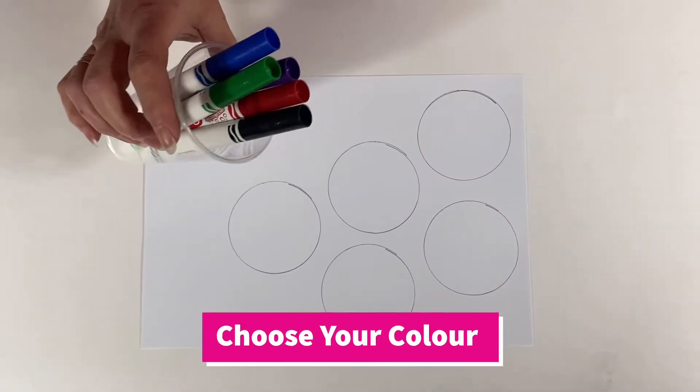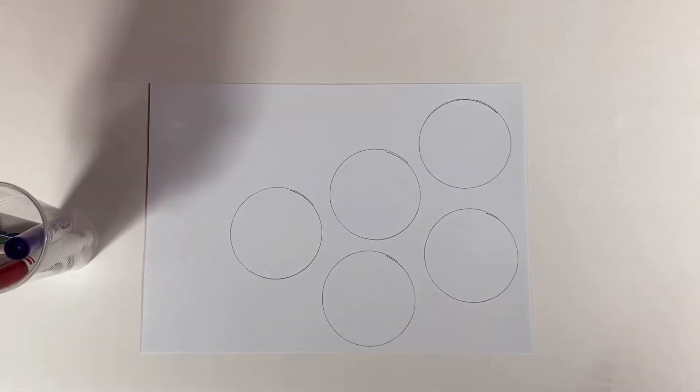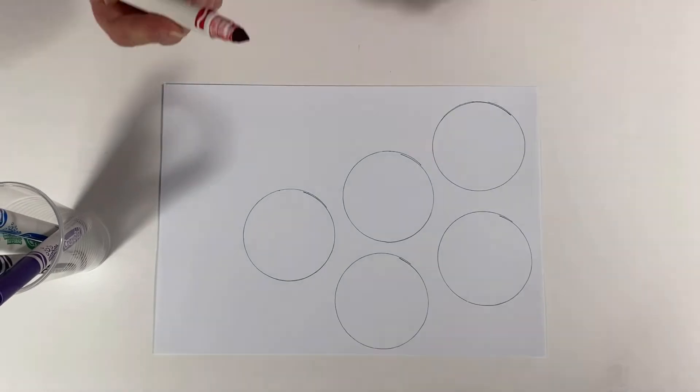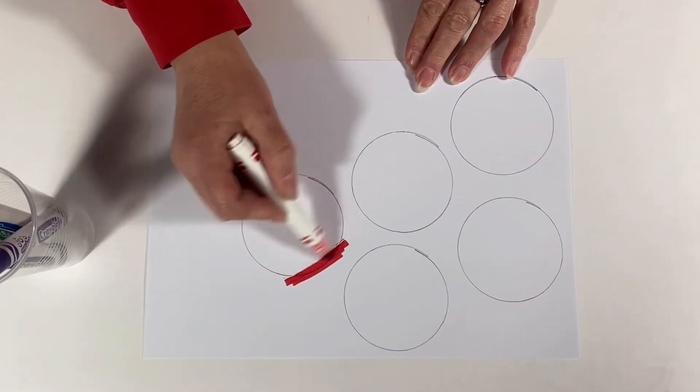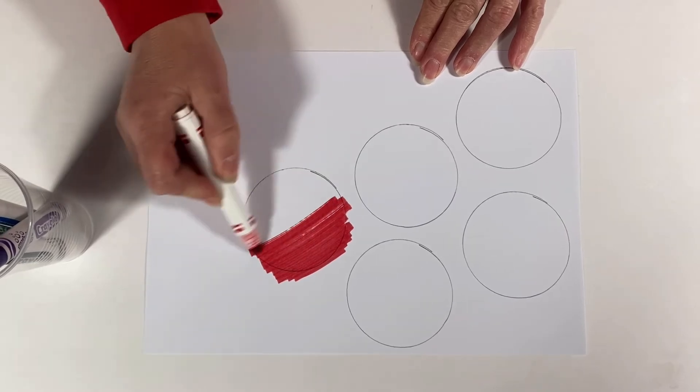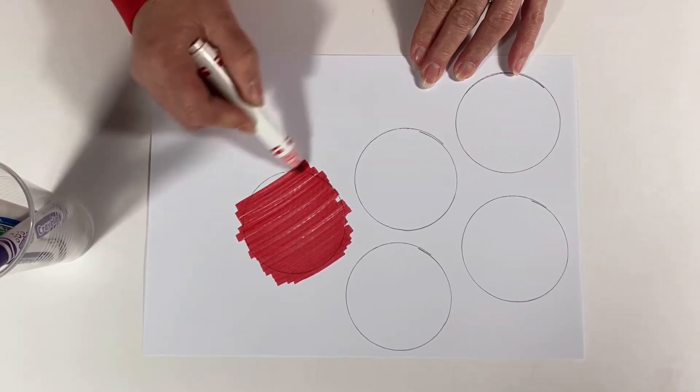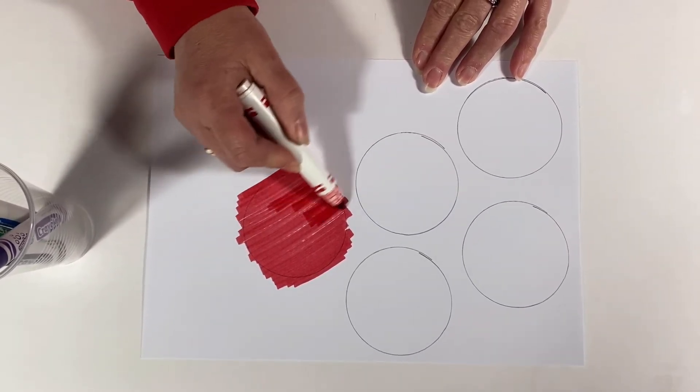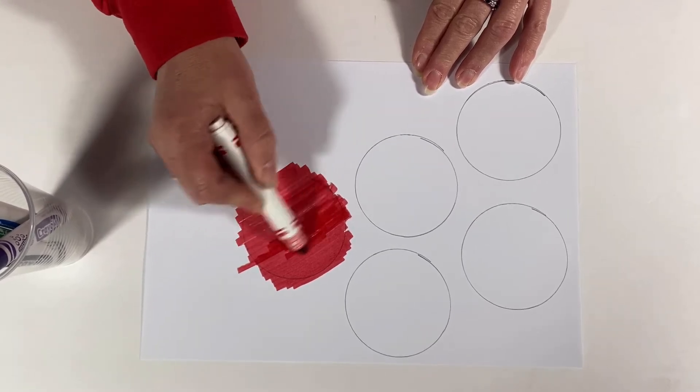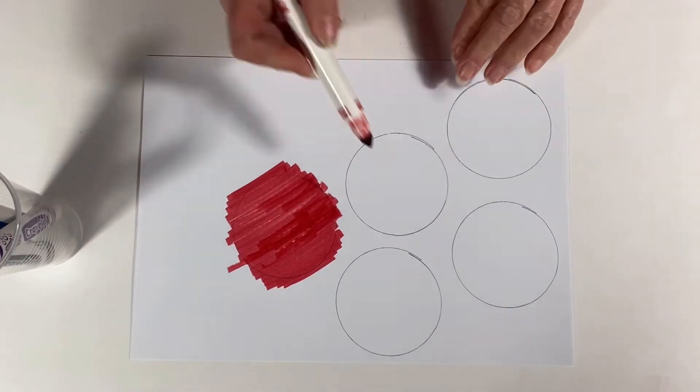Going to color them in. I've got some felt tips here. Doesn't matter if you go over the edge because we're going to be cutting them out, and I'm going to go over the edge on purpose. If we can't see the pencil lines, we can draw it again.